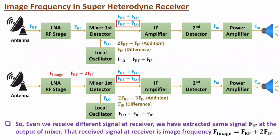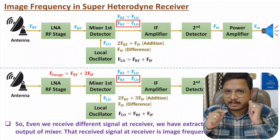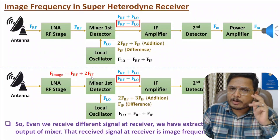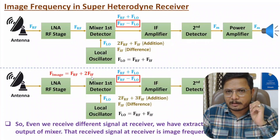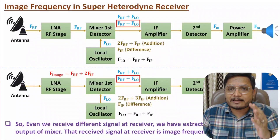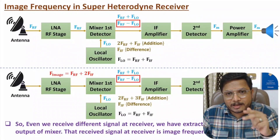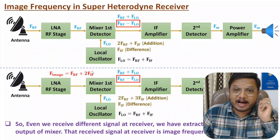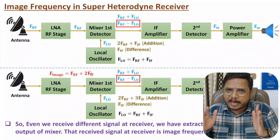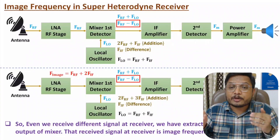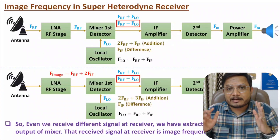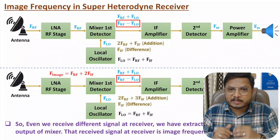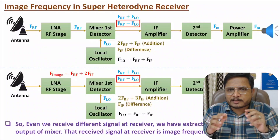At the image frequency, there will be false reception of the signal. As and when you receive a signal with the image frequency, you will always be receiving a false signal. How to avoid this false signal reception? This false signal reception can be avoided by keeping FIF higher. If you keep FIF high, you can avoid image reception. That is one way to resolve the issue of image frequency, but image frequency will always be present with your receiver.